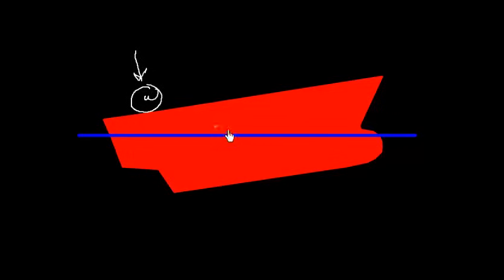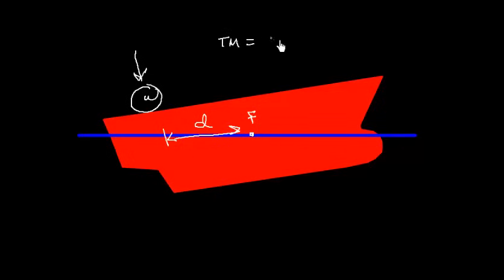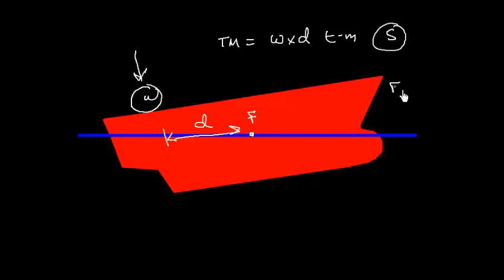Similarly, if I load weight W at a distance D from the center of flotation on the aft side, the trimming moment is W into D ton-meters by stern, because this time the trimming moment cause is towards stern.